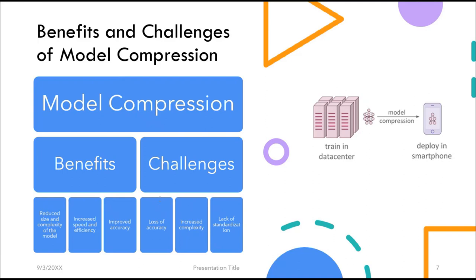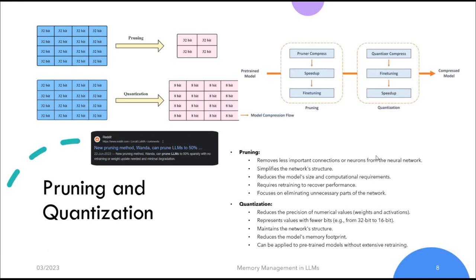Overall, model compression is a promising technique for reducing the size and complexity of LLMs without significantly impacting performance. However, there are challenges that need to be addressed, and the choice of technique should be based on your specific use case. We will now discuss pruning and quantization — two techniques used in LLMs to reduce model size and computational requirements while maintaining performance.